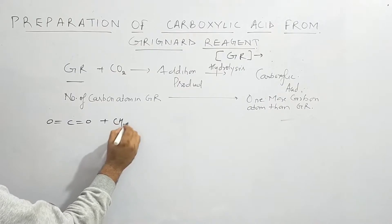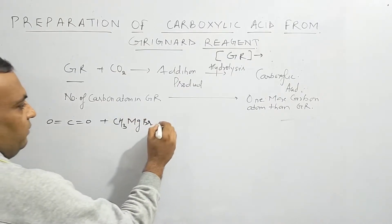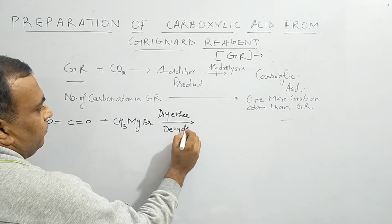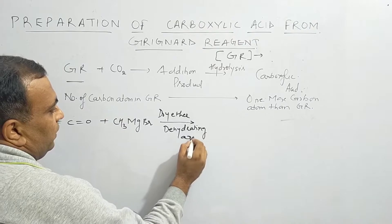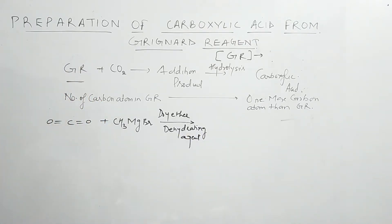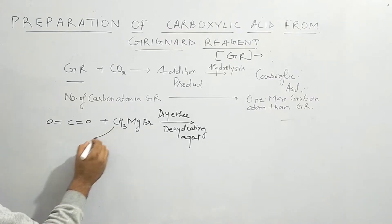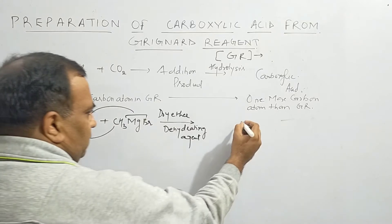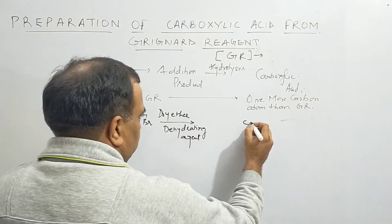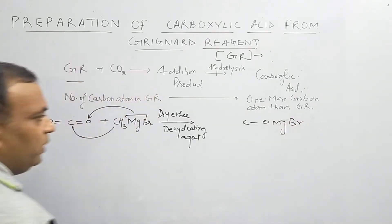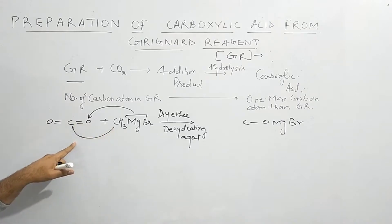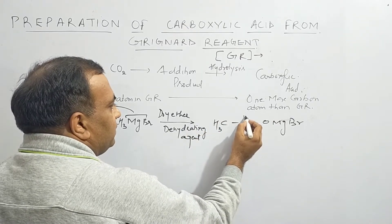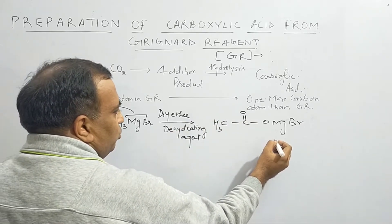Let us take CO₂ and react it with the Grignard reagent CH₃MgBr in the presence of dry ether. Dry ether is a dehydrating agent that absorbs moisture, because the Grignard reagent will react with moisture. The alkyl group adds to the carbon of CO₂, and MgBr adds to the oxygen, giving an addition product with C and OMgBr.